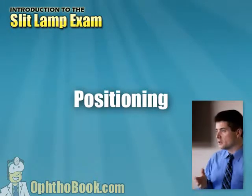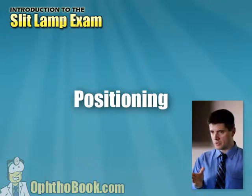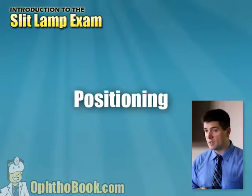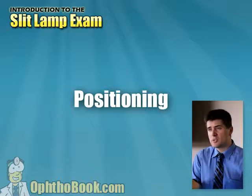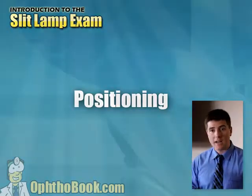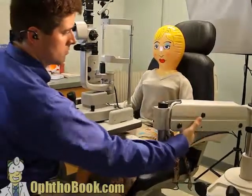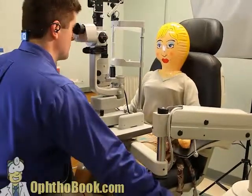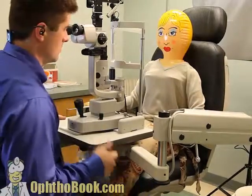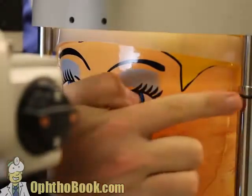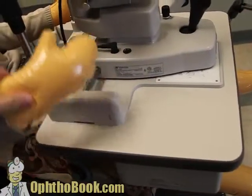Positioning — we've been trained from a customer service standpoint to always put your patient first, but when it comes to the slit lamp exam, your comfort is actually more important. A patient is examined once or twice a year; you're doing this three or four thousand times a year — talk about repetitive stress injury. So make yourself comfortable first: set your seat, set the microscope at the height you like with the locking mechanism, and only then set the patient comfortably. Get their forehead against the bar, chin on the chin rest, and line up the lateral canthus with the black mark for maximal excursion.